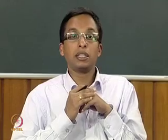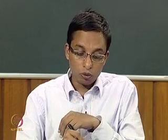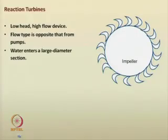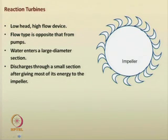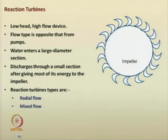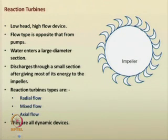Reaction turbines are opposite to dynamic pumps. Water enters through a large diameter section, then converges to a small eye, discharging through the small section after giving most of its energy to the impeller. Reaction turbines include radial flow turbines, mixed flow turbines, and axial flow turbines — all are dynamic devices.